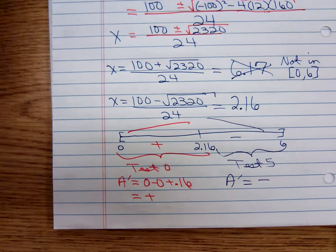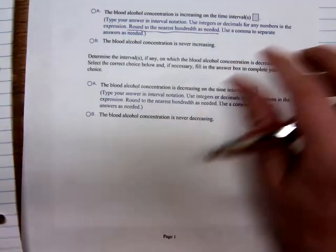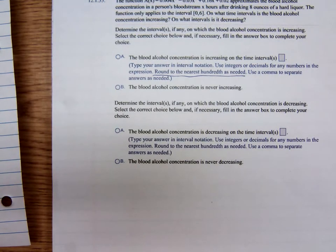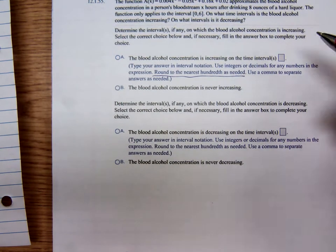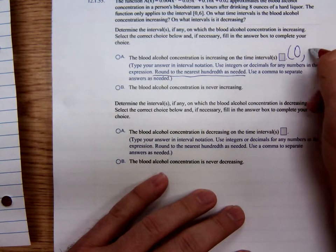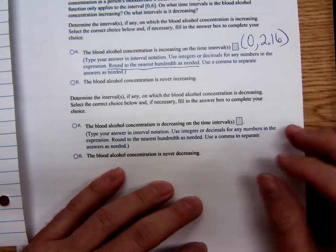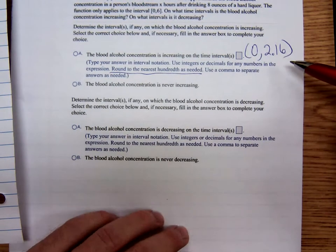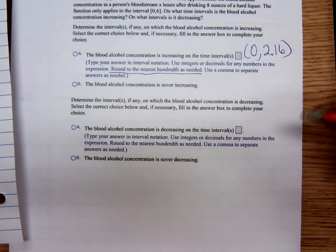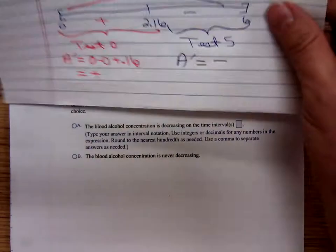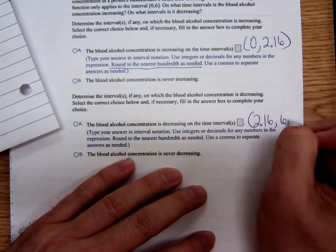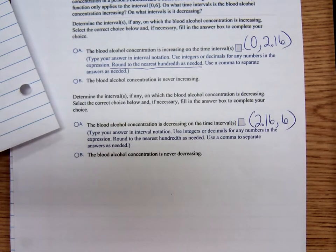And now we're ready to answer the question. We want to know the time interval on which the blood alcohol concentration is increasing. That's from (0, 2.16). Remember, in this course we're stating increasing and decreasing intervals as open intervals. By that I mean the parentheses. It's decreasing, the blood alcohol concentration is decreasing, from 2.16 to 6, (2.16, 6). Any questions there?